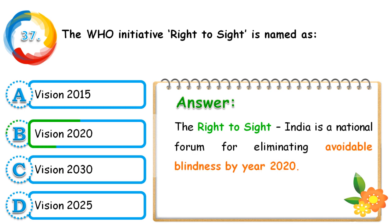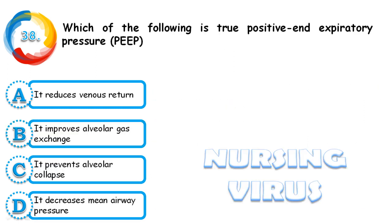Question 37: The WHO initiative 'Right to Sight' is named Vision 2015, Vision 2020, Vision 2030, or Vision 2025. The correct answer is Vision 2020. Right to Sight is India's national forum for eliminating avoidable blindness by the year 2020.